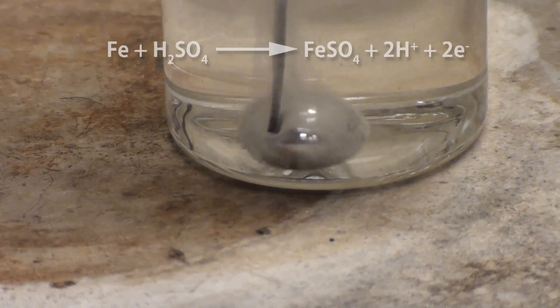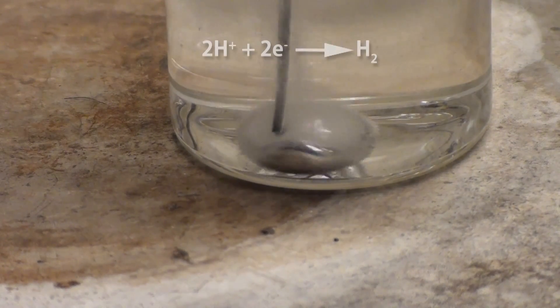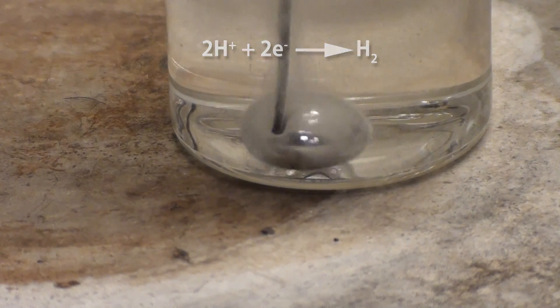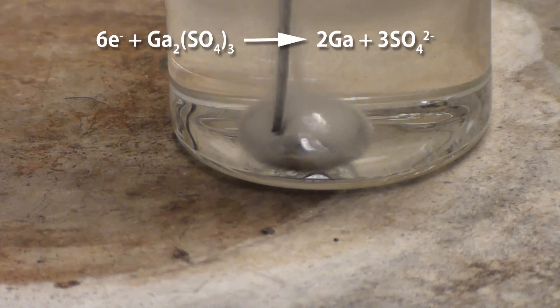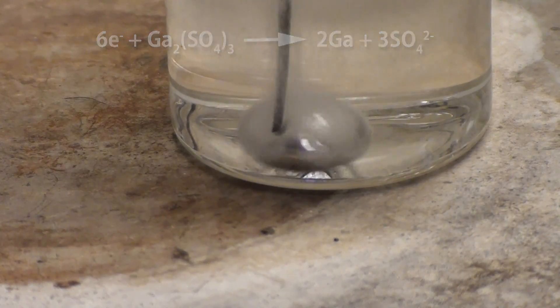Anyway, what's happening is the iron is slowly dissolving in the acid and releasing electrons. Normally these electrons go on to produce hydrogen. But if the iron touches the gallium then the electrons conduct through the two metals and reduces the gallium sulfate back into gallium. Without the gallium sulfate, the surface tension drops and the gallium relaxes, spreading out.